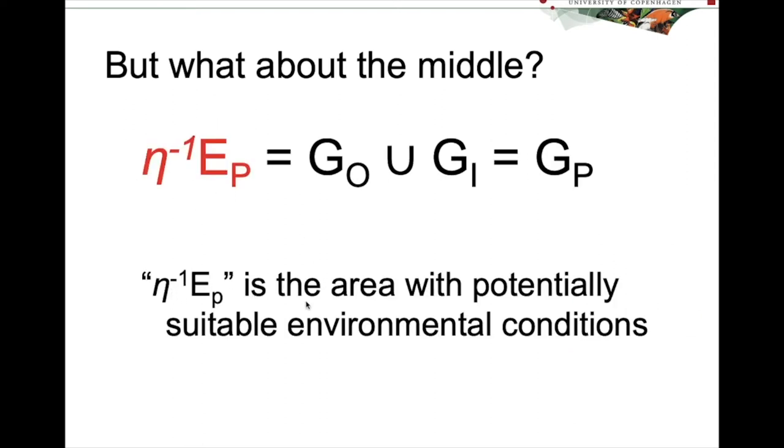So inverse EDA EP is the area represented or the area that has environmental conditions that are potentially suitable. So here that is again, the area with potentially suitable environmental conditions. So the inverse of EDA EP is the same as GP, the geographical area that is potentially suitable for a species.